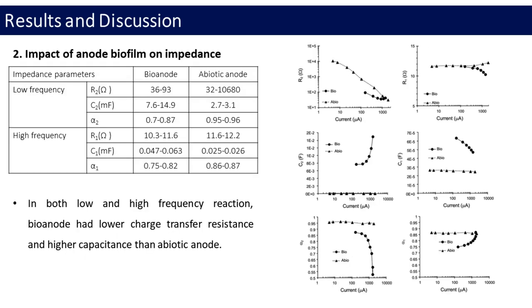The second characteristic considered is impact of anode biofilm on impedance. Figure and table here shows the different impedance characteristic in low/high frequency of tested anodes. In low/high frequency, in the bioanode, R2 ranged from 36 to 93 ohms, C2 ranged from 7.6 to 14.9 mF, and α2 ranged from 0.70 to 0.87 within current range of 160 and 1424 microA. In the abiotic anode, R2 ranged from 32 to 10,680 ohms, C2 ranged from 2.7 to 3.1 mF, and α2 ranged from 0.95 to 0.96 within current range of 5 and 1915 microA. It means the bioanode had lower charge transfer resistance and higher capacitance than the abiotic anode, and the bioanode showed more non-ideal capacitance in both charge transfer processes.